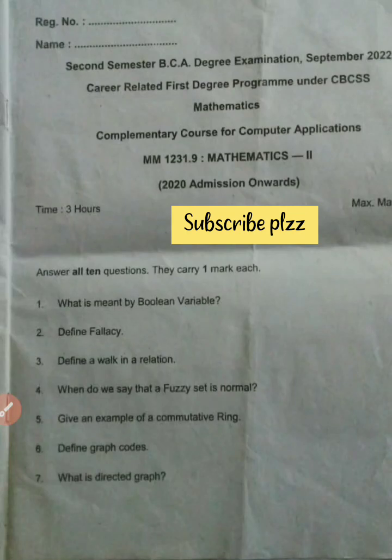Hi friends, second semester BCA exam 2022, 2020 admission onwards. First question: what is meant by Boolean variable? Second: define fallacy. Third: define a walk in a relation. Fourth: when do we say that a fuzzy set is normal? Fifth: give an example of a commutative ring. Sixth: define graph codes. Seventh: what is directed graph?